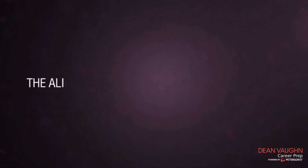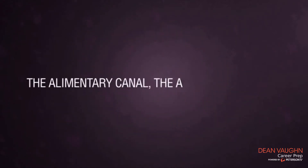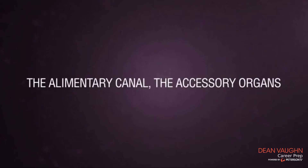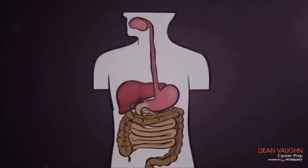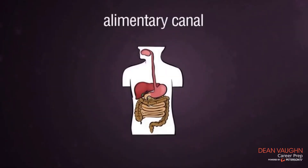The digestive system consists of two main parts: the alimentary canal and the accessory organs. We will start this module by learning about the alimentary canal, which is also called the digestive tract, and its parts.